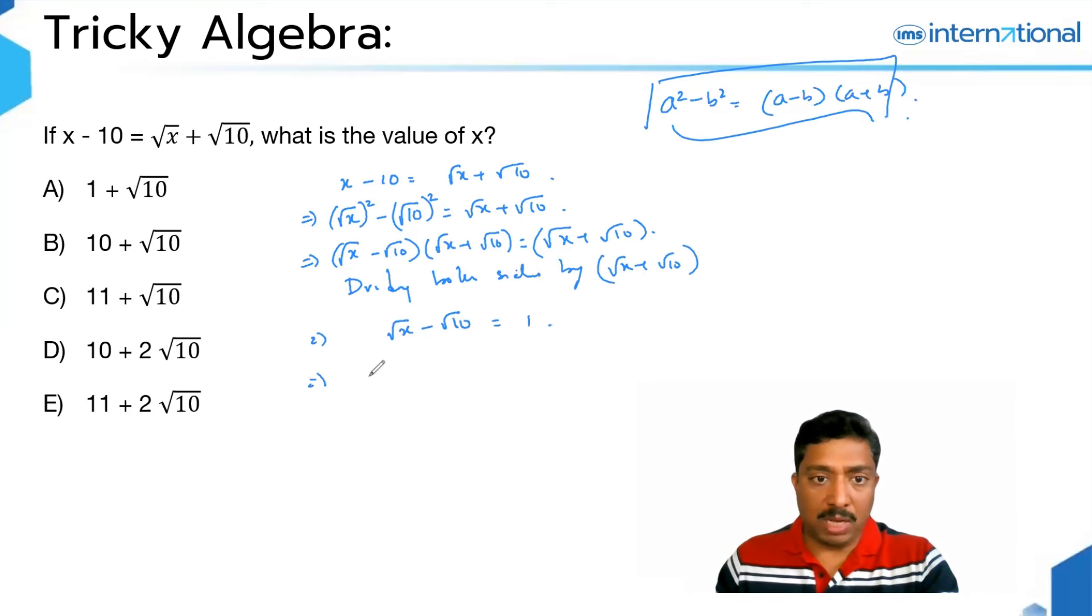And now subject the variable X, then you have this 1 plus root 10, squaring it on both sides, gives you X equal to 1 plus 2 root 10, which is nothing but 11 plus 2 root 10. Hence, the answer to this question must be E.